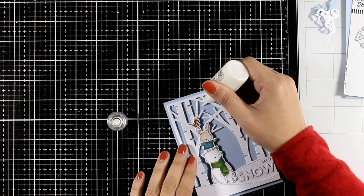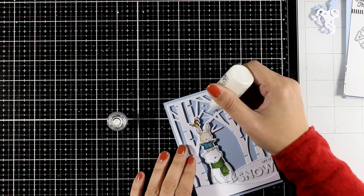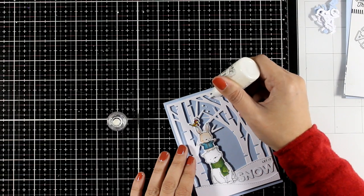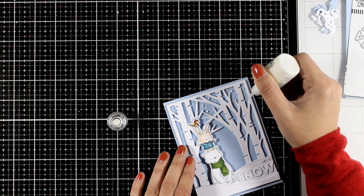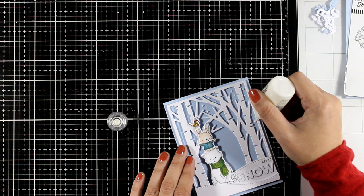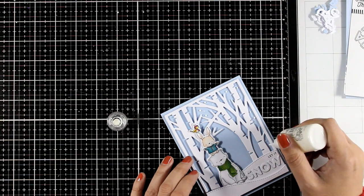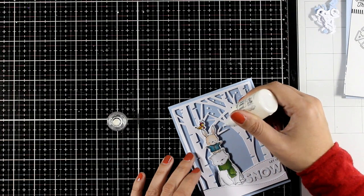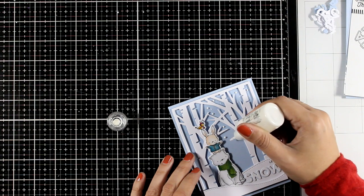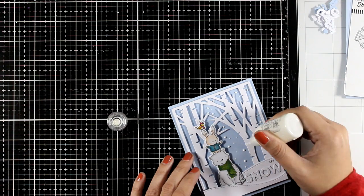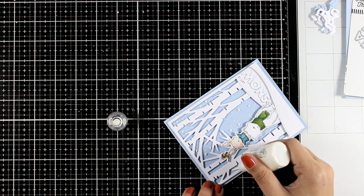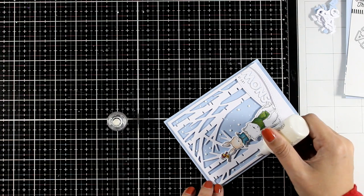And of course you cannot have a card for winter and snow without actually having snow on your background. And since that idea of having shaker snow at the background failed completely since I forgot to use the acetate, I'm going with my white nouveau drops and I'm going to add my own snow. I'm making sure that not all those dots are the same size. I have some smaller, some bigger, just to make it look more interesting.